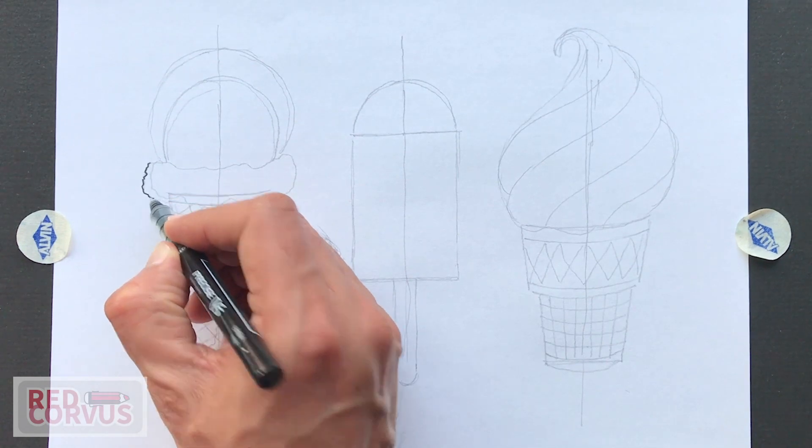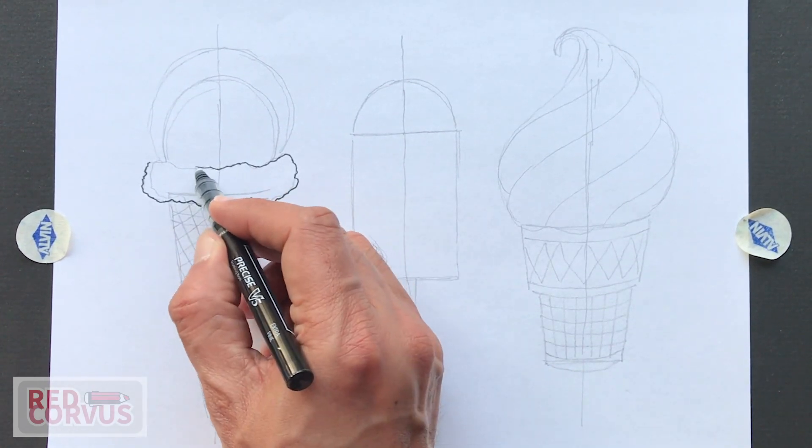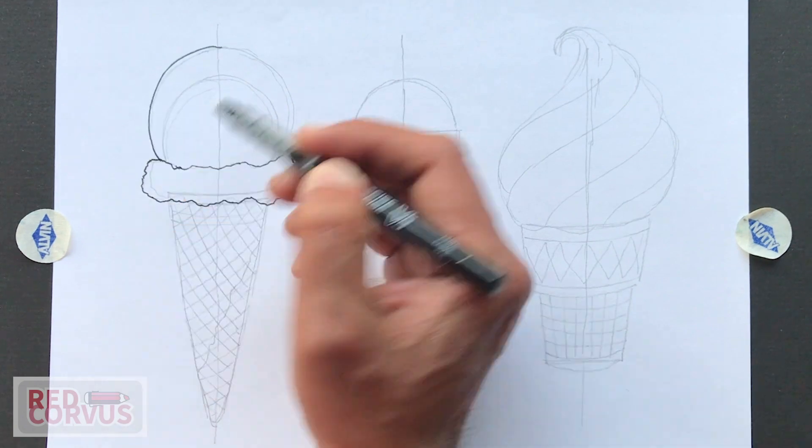Now we can start inking. And I'm simply going over the lines I did in pencil and tracing them with a pen.